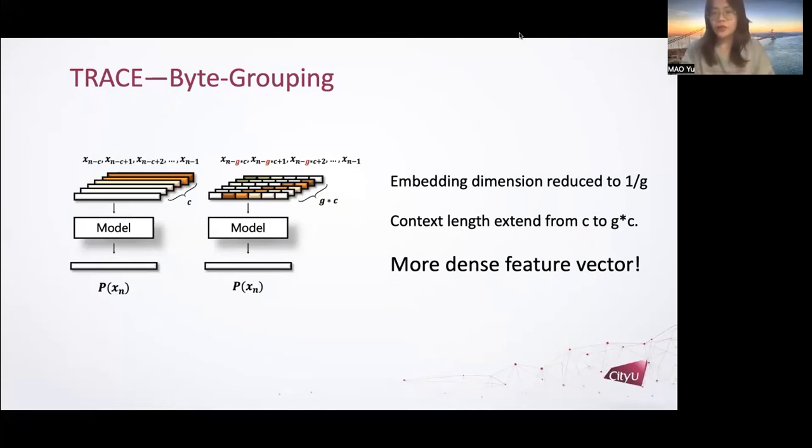In sequential modeling, the adjacent symbols usually contain similar information, thus can be grouped. So we group adjacent bytes together to form several groups and each group is concatenated as one vector of the input. In this way, byte context length can be extended G times longer with no computational speed loss. Embedding dimension would reduce to 1/G of the original, and this will lead to a more dense input feature vector.